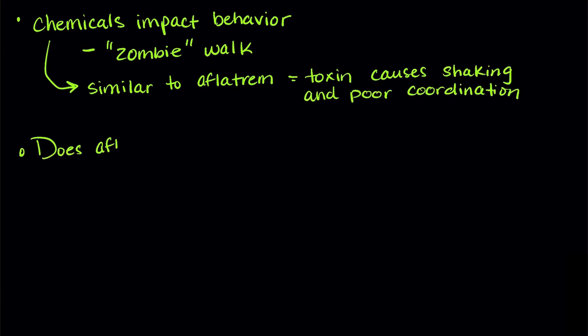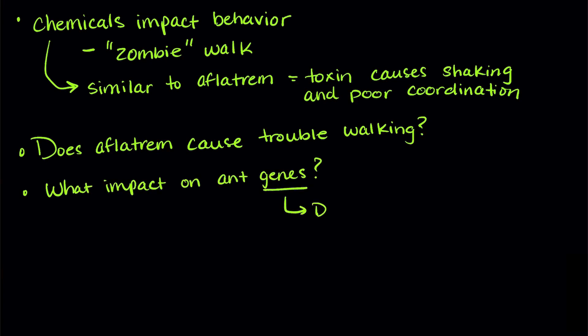So researchers wanted to know if this type of chemical was what caused ants to have trouble walking. They also wanted to know if it had an impact on the ant's genes. Just a quick reminder, the genes are segments of DNA that contain instructions for how an organism functions. So how did the researchers do all of this? Let's talk about the methods.